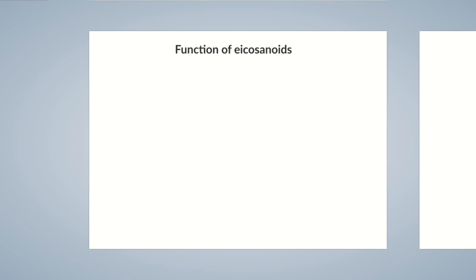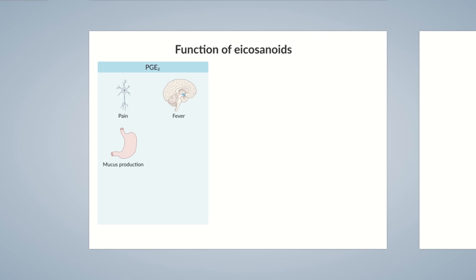As eicosanoids are local hormones, it's important to consider their physiological effect depending on the organ they're formed in. Let's start with prostaglandin E2. One very important function is its involvement as a mediator of pain and the inflammatory response, due to its binding to free nerve endings called nociceptors, which register pain signals. Prostaglandin E2 is also produced in the hypothalamus in response to chemical messengers released during an inflammatory response, so prostaglandins increase the body's core temperature, inducing fever. In the stomach, prostaglandin E2 has a protective effect by facilitating mucus production.